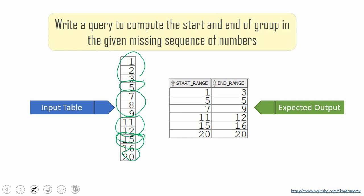So what we need to do in each group, for example, from 1, 2, 3, we need to print starting range is 1 and the ending range is 3. Since 5 is only one number in that particular group, we just need to print 5 as the starting as well as 5 as the end value of that group.